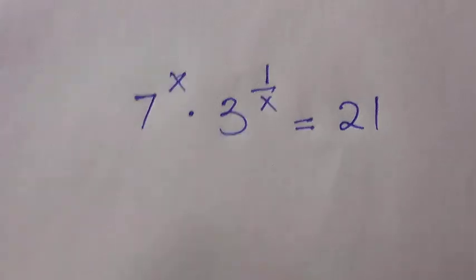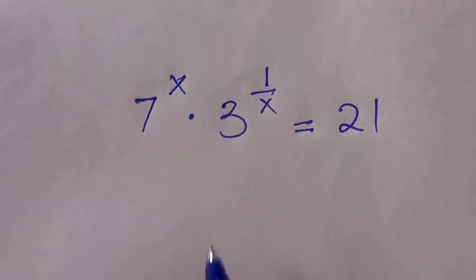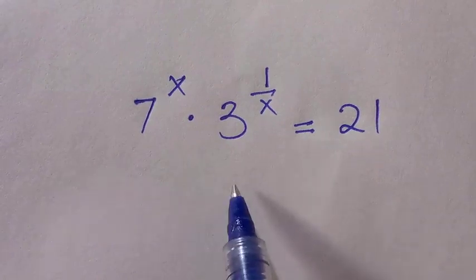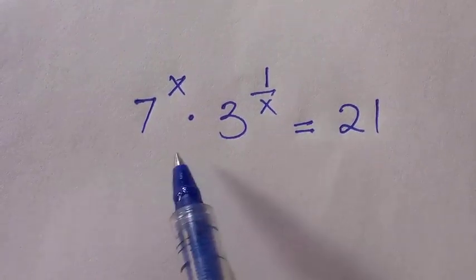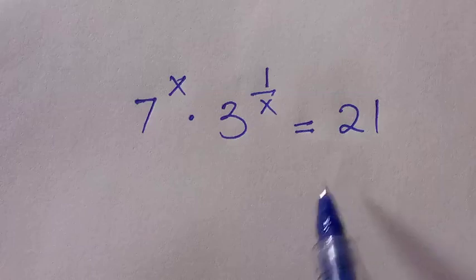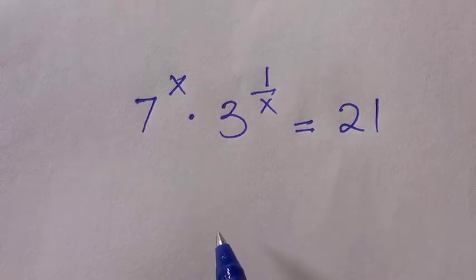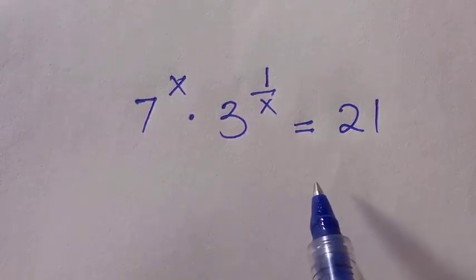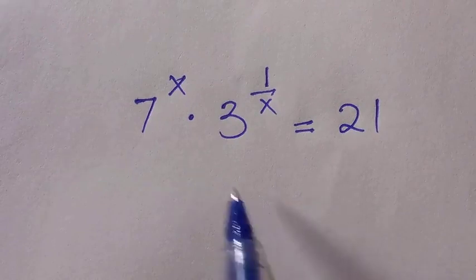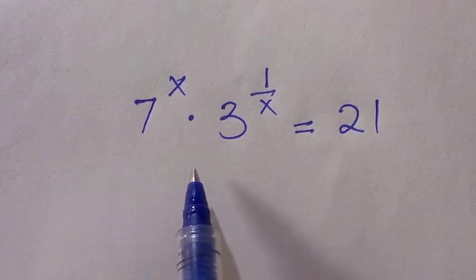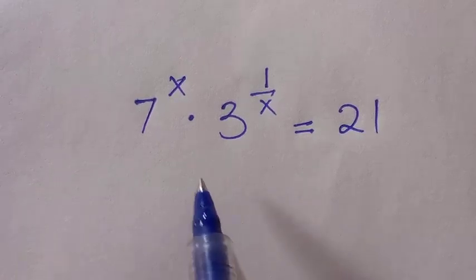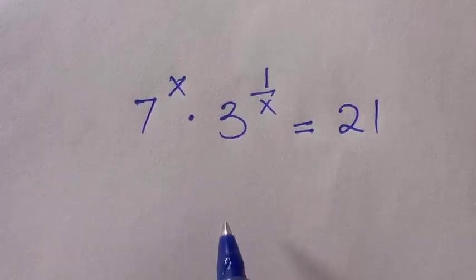This problem by inspection: when we substitute x equals 1 we are going to have the left hand side equals the right hand side. That is, x equals 1 is one of the solutions here. But that is not the only solution to this problem — we still have another solution that satisfies this equation.